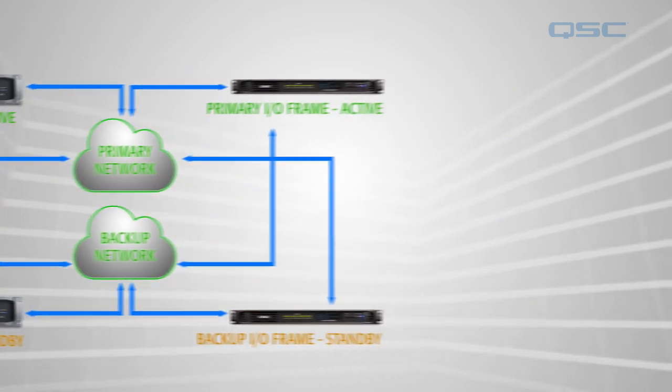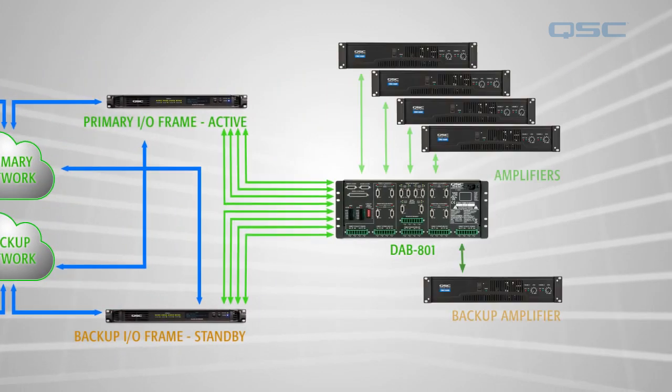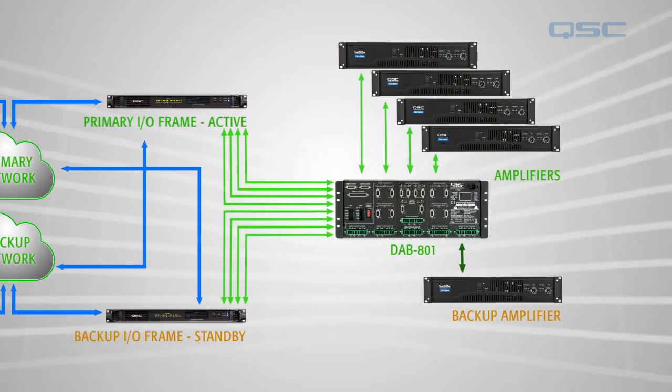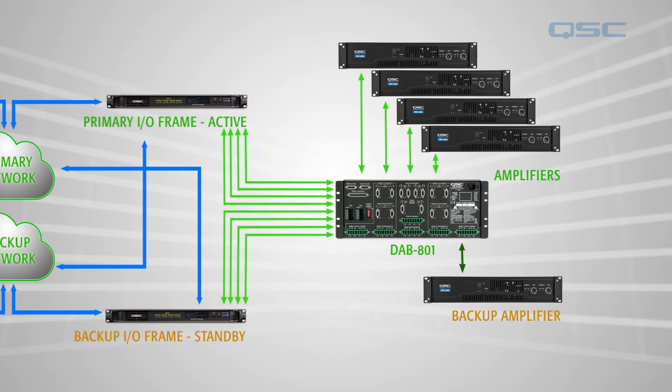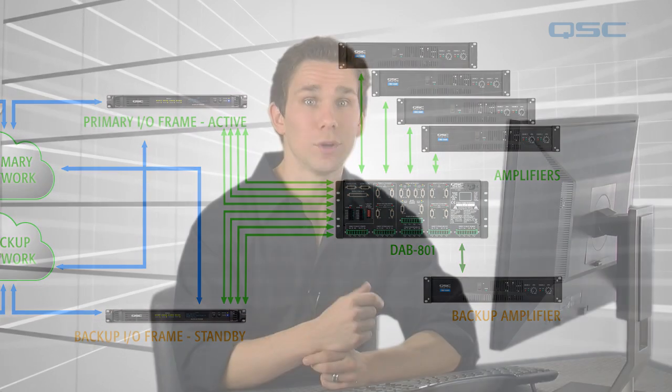In addition, you can have amplifier redundancy with the help of QSC's DAB801, which is the data port amplifier backup panel. We're going to simulate a possible failure for each of these elements so you can see for yourself how the system reacts.